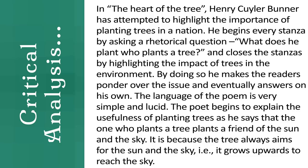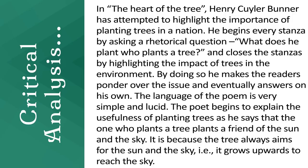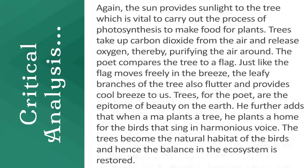The language of the poem is very simple and lucid. The poet begins to explain the usefulness of planting trees, saying that the one who plants a tree plants a friend of the sun and the sky. Trees always aim for the sun and sky — growing upwards to reach the sky — while the sun provides sunlight vital for photosynthesis. Trees also take up carbon dioxide from the air and release oxygen, thereby purifying the air around us.